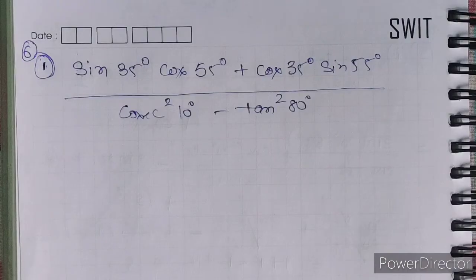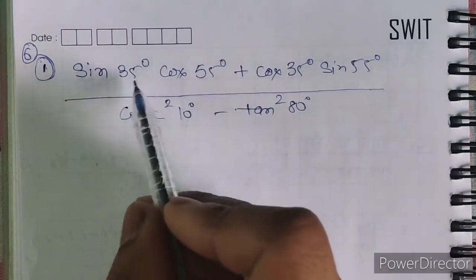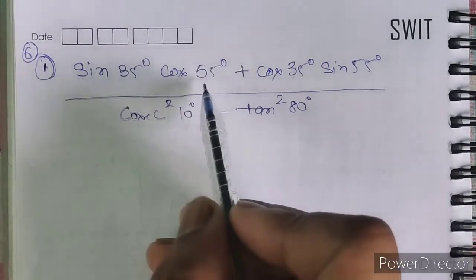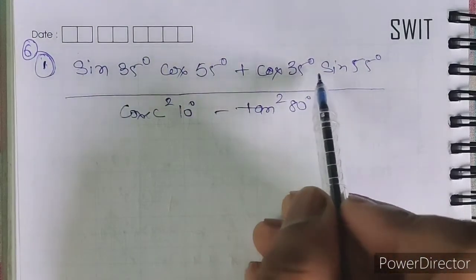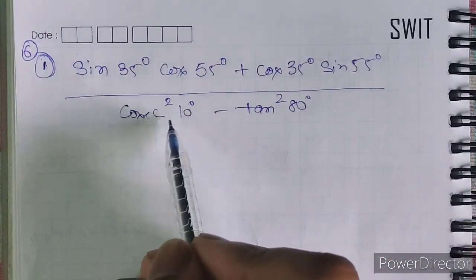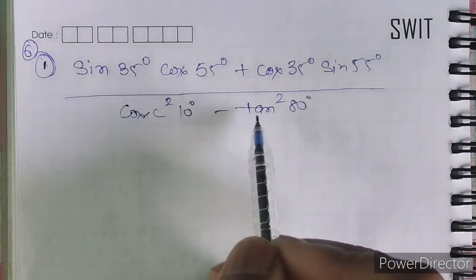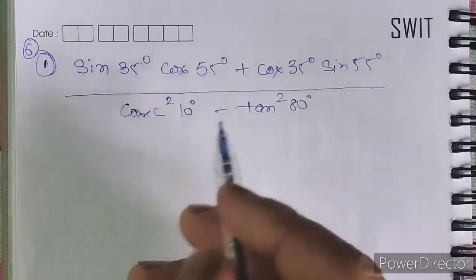Hello and welcome to another session of trigonometry. We will start today from question number six and complete till question number ten. Question six is: sine 35 degree into cos 55 degree plus cos 35 degree into sine 55 degree, divided by cos square 10 degree minus tan square 80 degree.